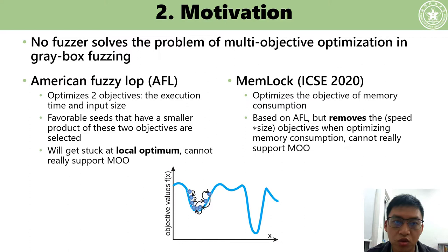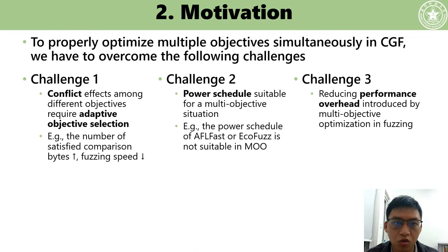For example, AFL optimized two objectives including execution time and input size. Seeds with a smaller product of these two objectives are selected, but according to the previous analysis, it gets stuck at local optimal and cannot really support multi-objective optimization. Memlock optimizes the objective of memory consumption. It is based on AFL, but removes the original objectives of AFL when optimizing memory consumption. Therefore, it cannot really support multi-objective optimization.